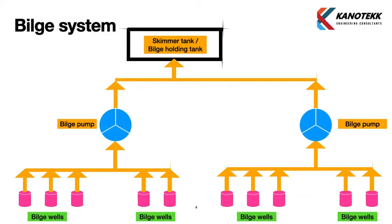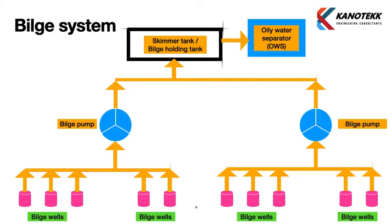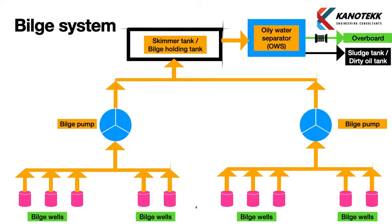The bilge holding tank stores the bilges, and the oily water separator takes suction from the bilge holding tank. The oily water separator separates oil and water, and the clean fluid is pumped overboard. The criteria is that the oil content in the clean separated fluid should be less than 15 ppm. The oil content monitor in the oily water separator measures the output and ensures only water meeting this criteria is pumped overboard. The remaining residue oil is kept in the sludge tank or dirty oil tank, which is eventually pumped to a supply vessel — it cannot be discharged overboard.